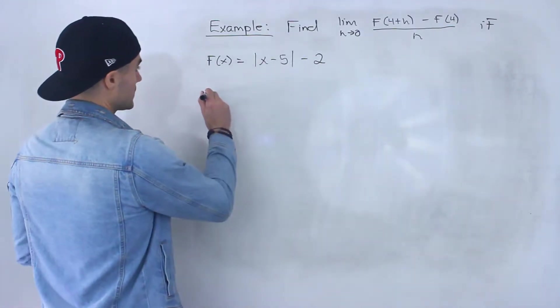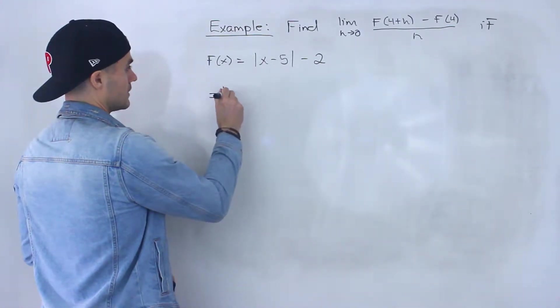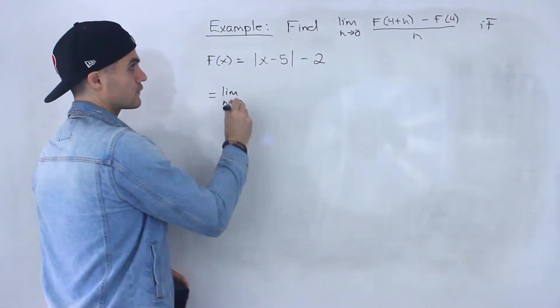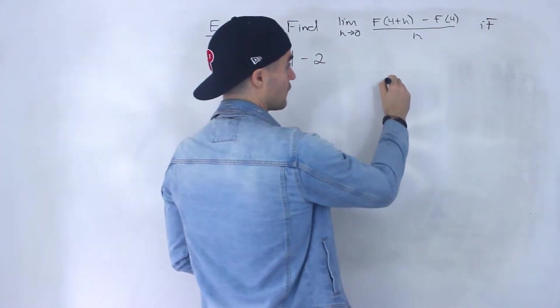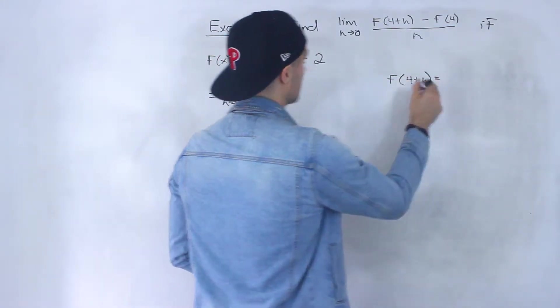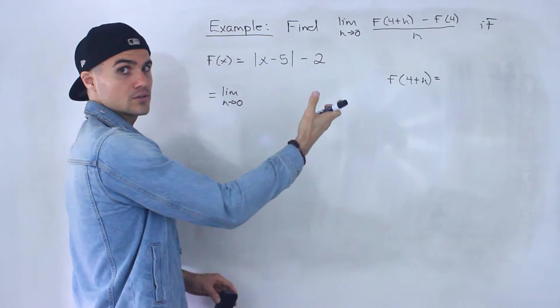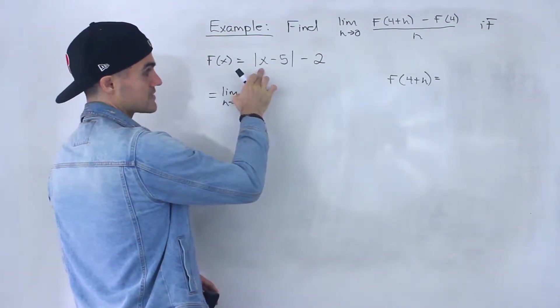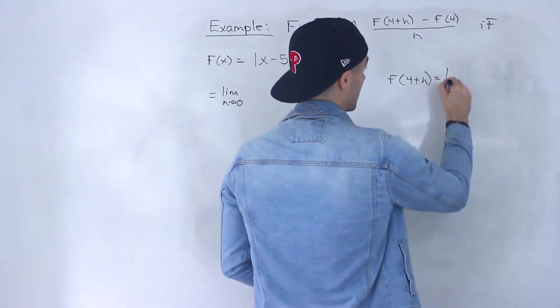What I'm going to start doing is first coming up with expressions for f(4+h) and then f(4). So for f(4+h), if f(x) is this here, all we do is plug in that 4+h for this x. So we'd have the absolute value of (4+h) - 5 - 2.